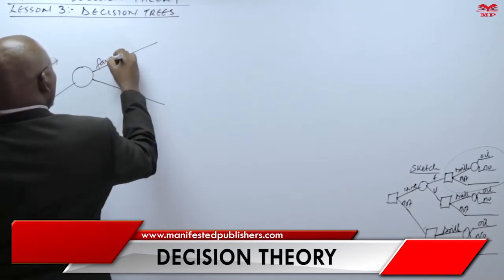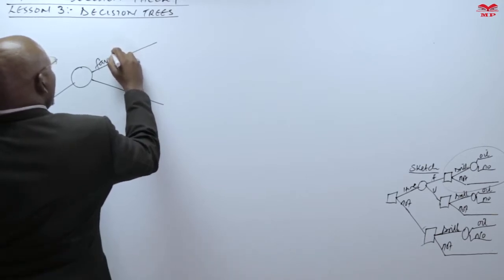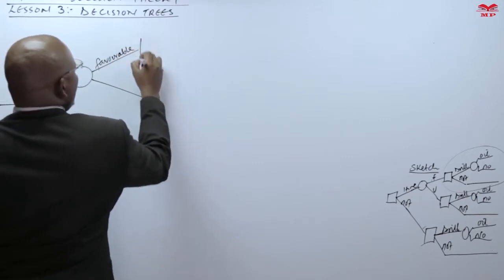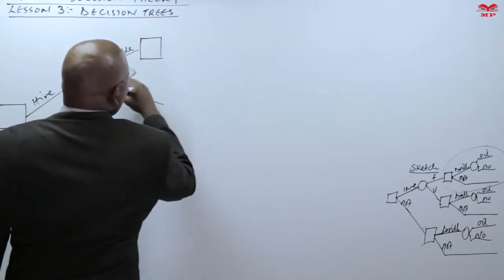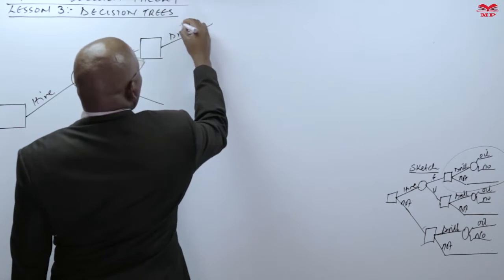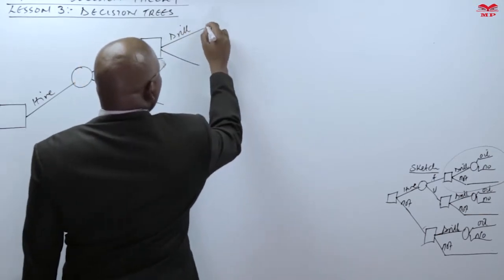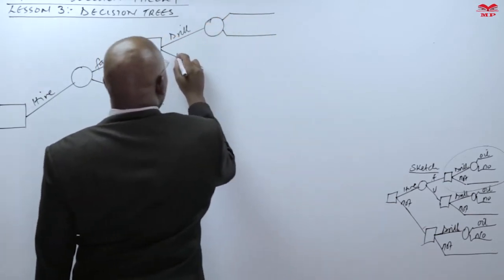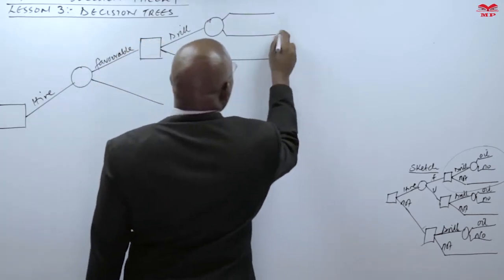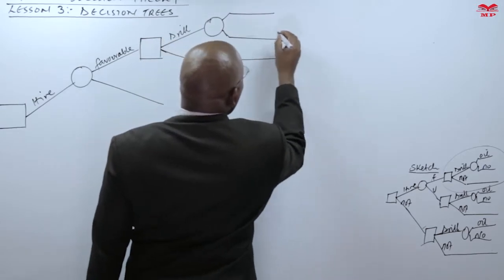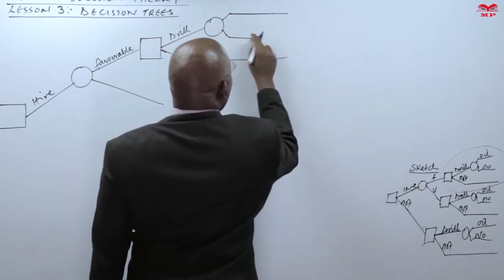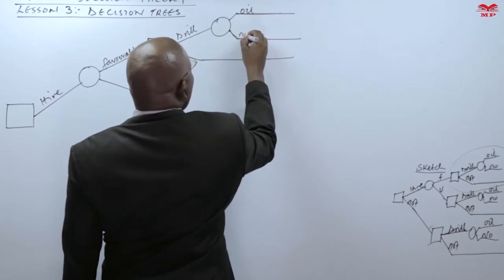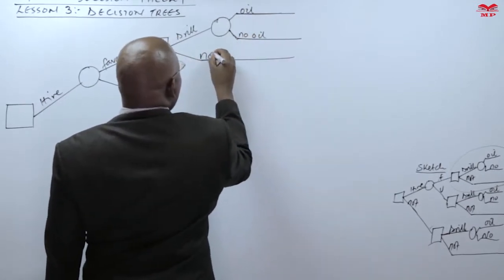When you have a favorable report, you make a decision to either drill or not. If you are able to drill, you will get oil or no oil. If you don't drill, then of course don't expect any return. So this is oil, this is no oil, this is no oil for the no-drill branch.